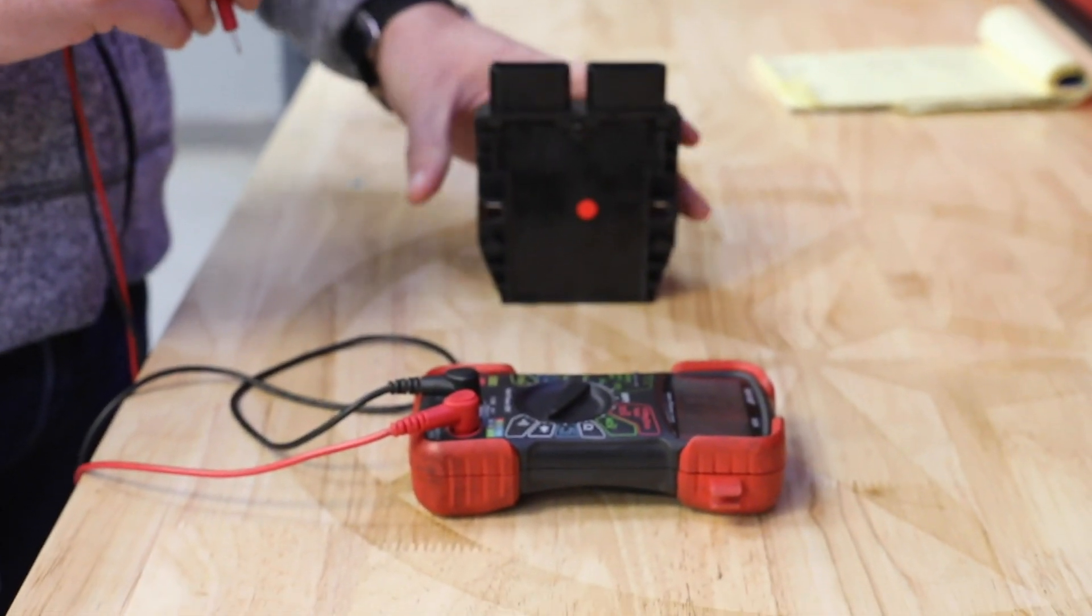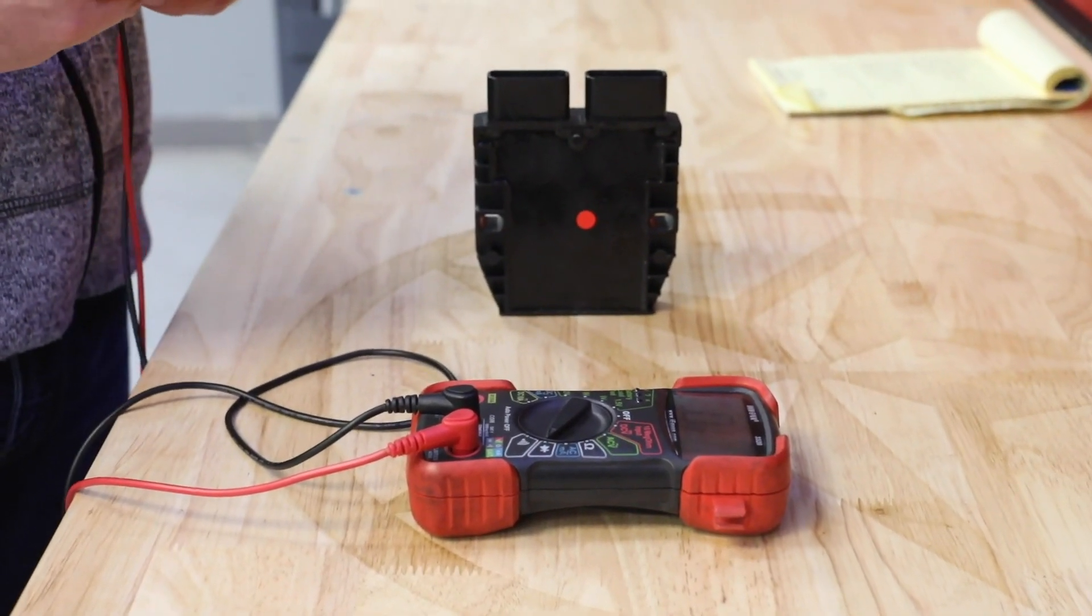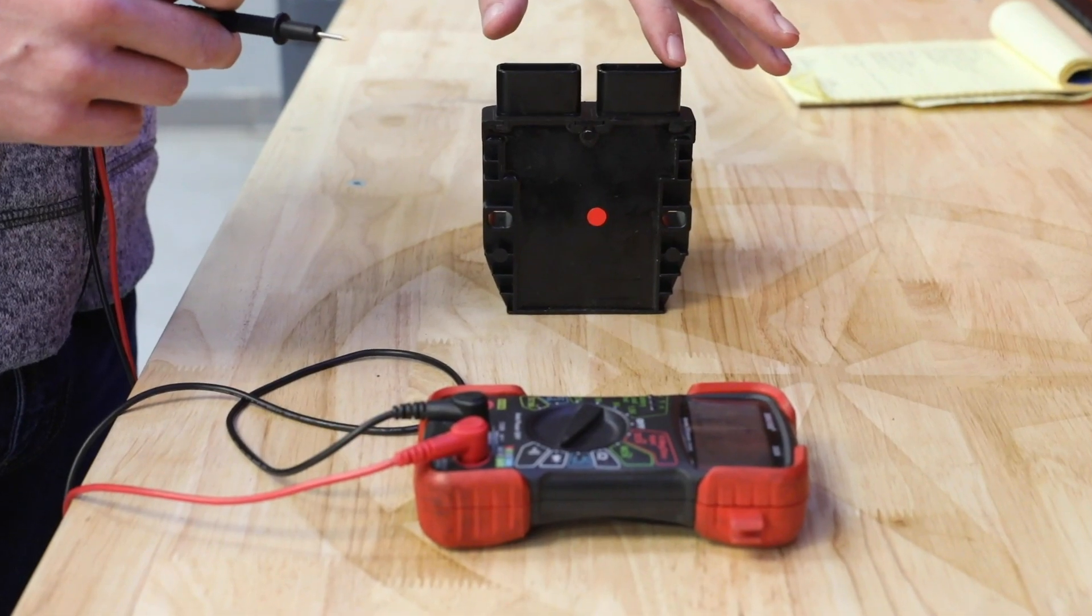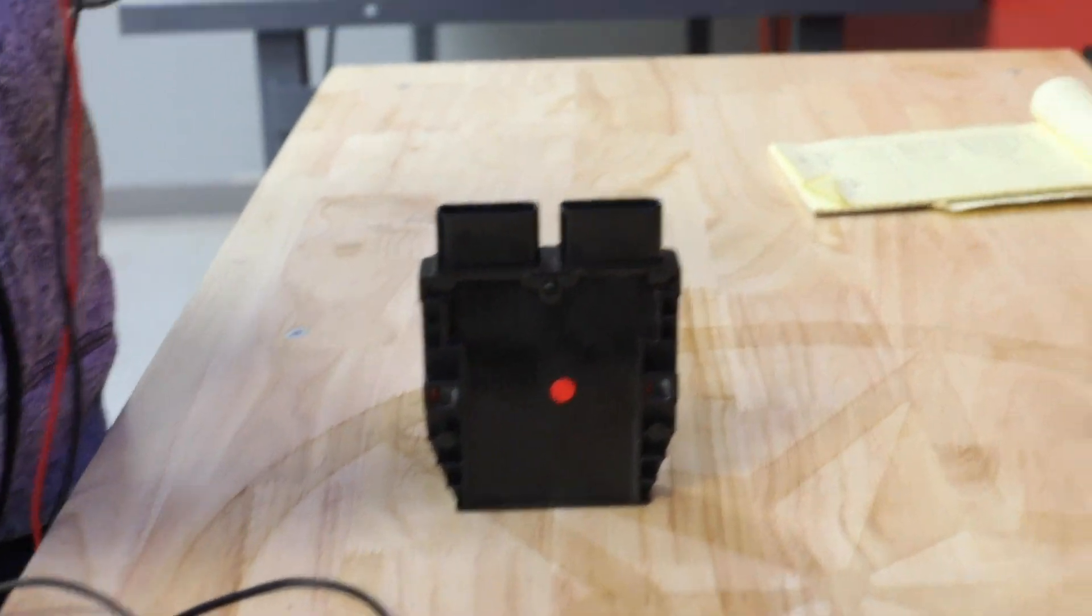And then what we'll do, we'll just repeat those steps for the forward and reverse bias test. But this time we're going to do it on the negative wire for the voltage regulator. And we'll show you values on the screen as well.